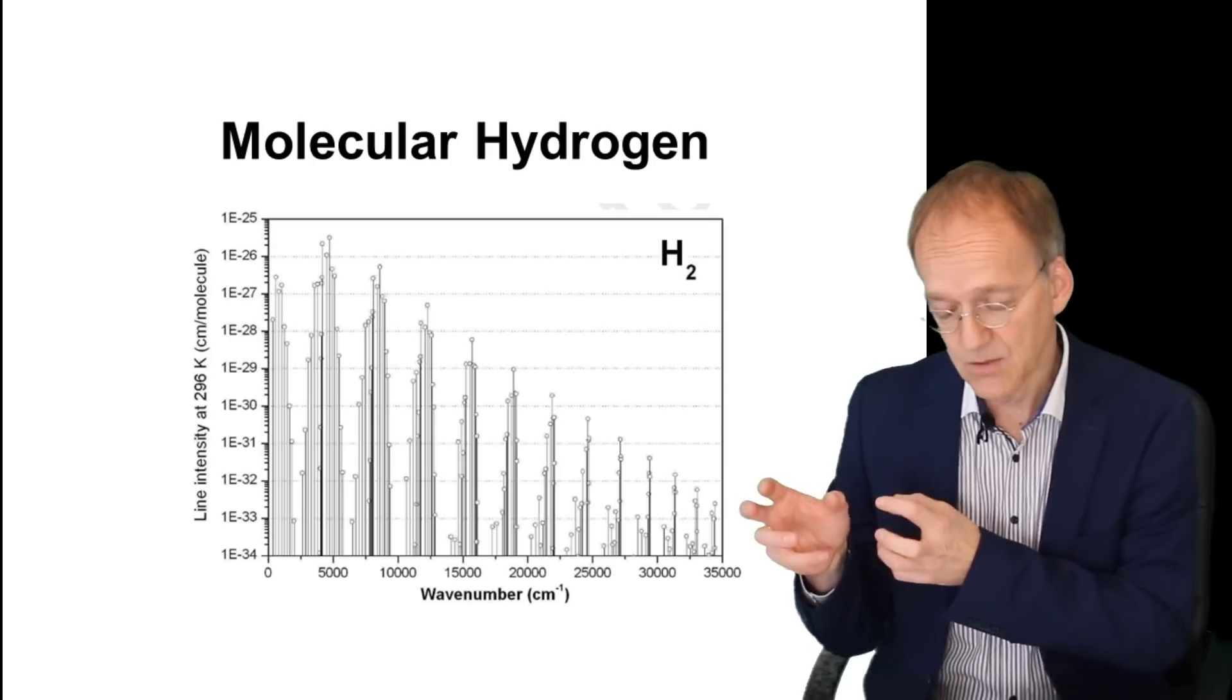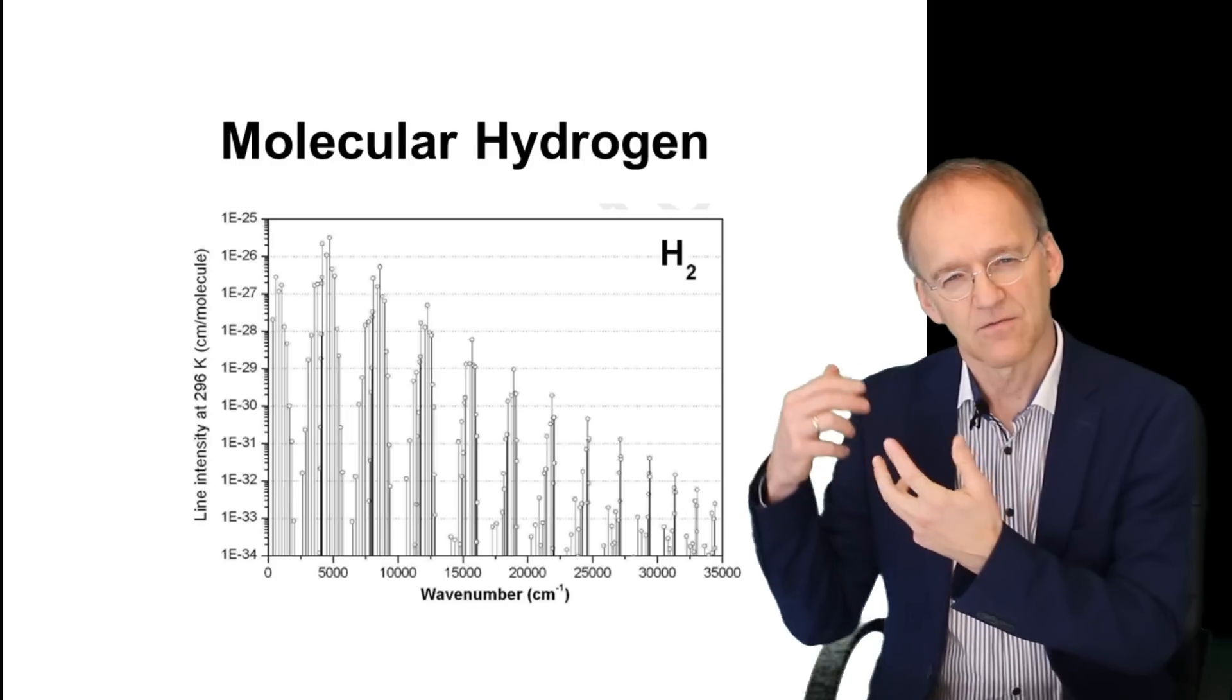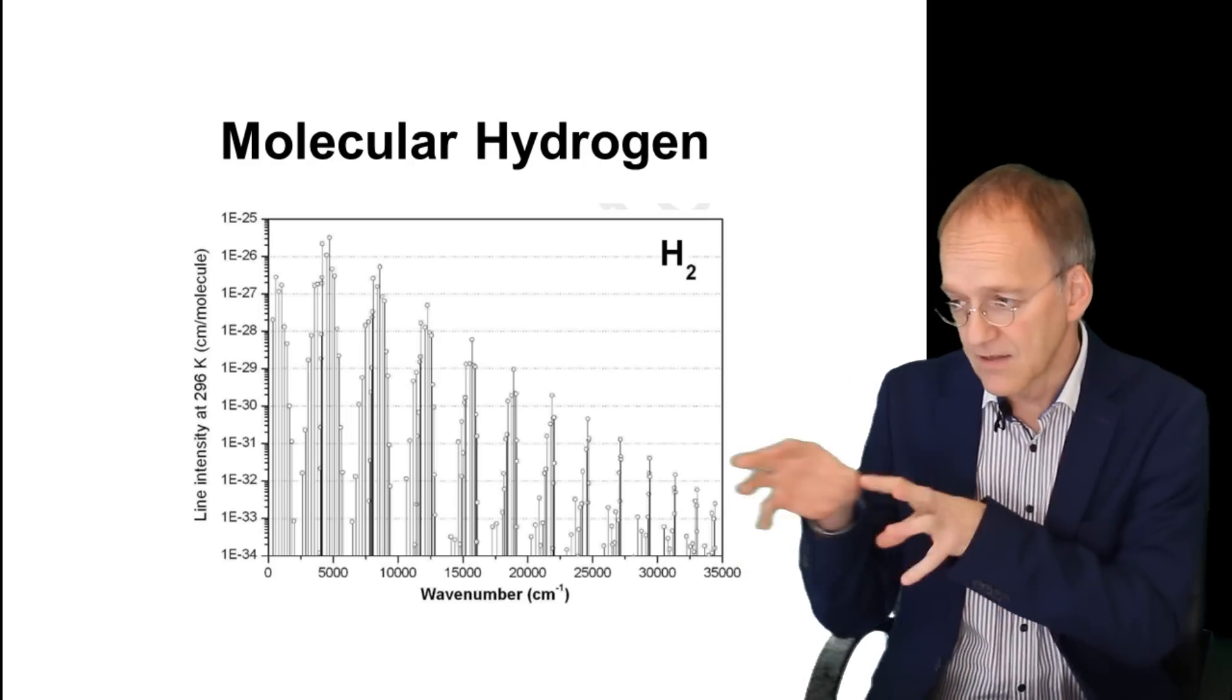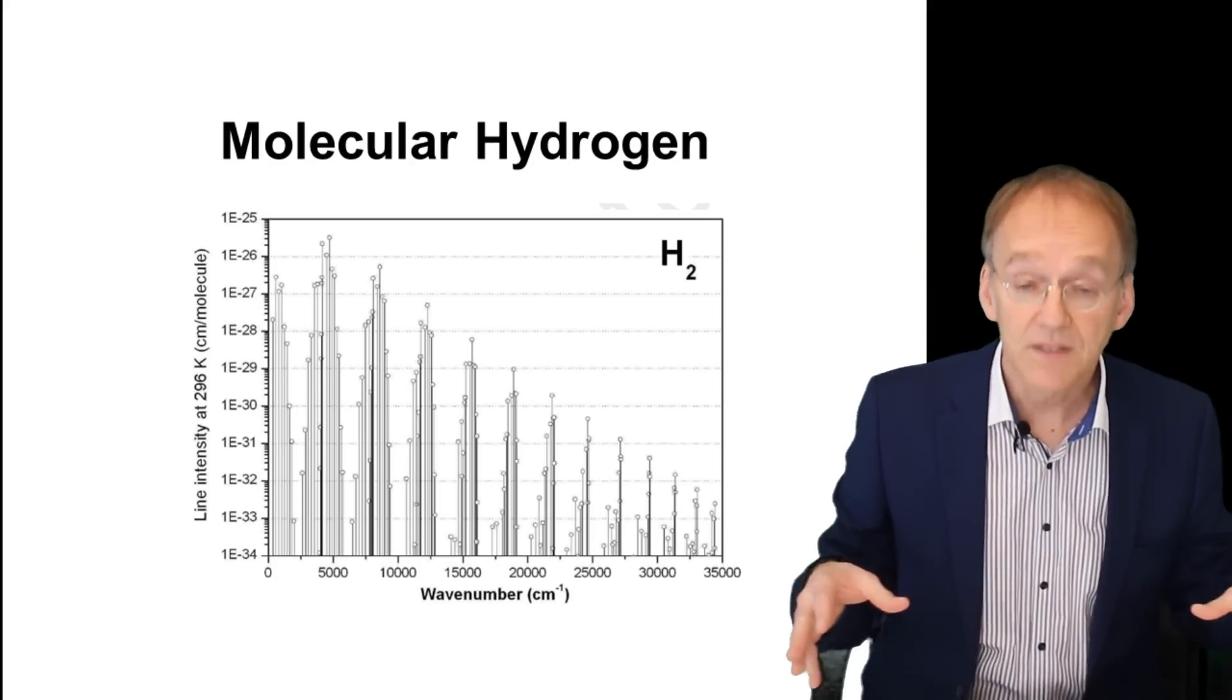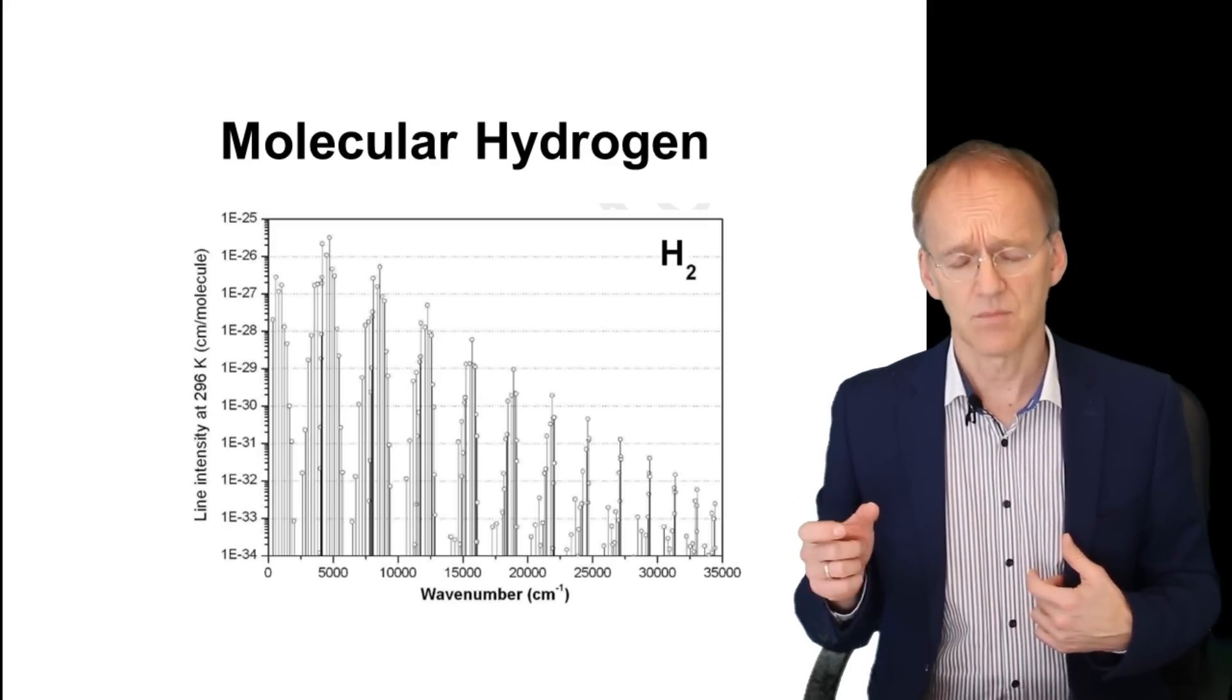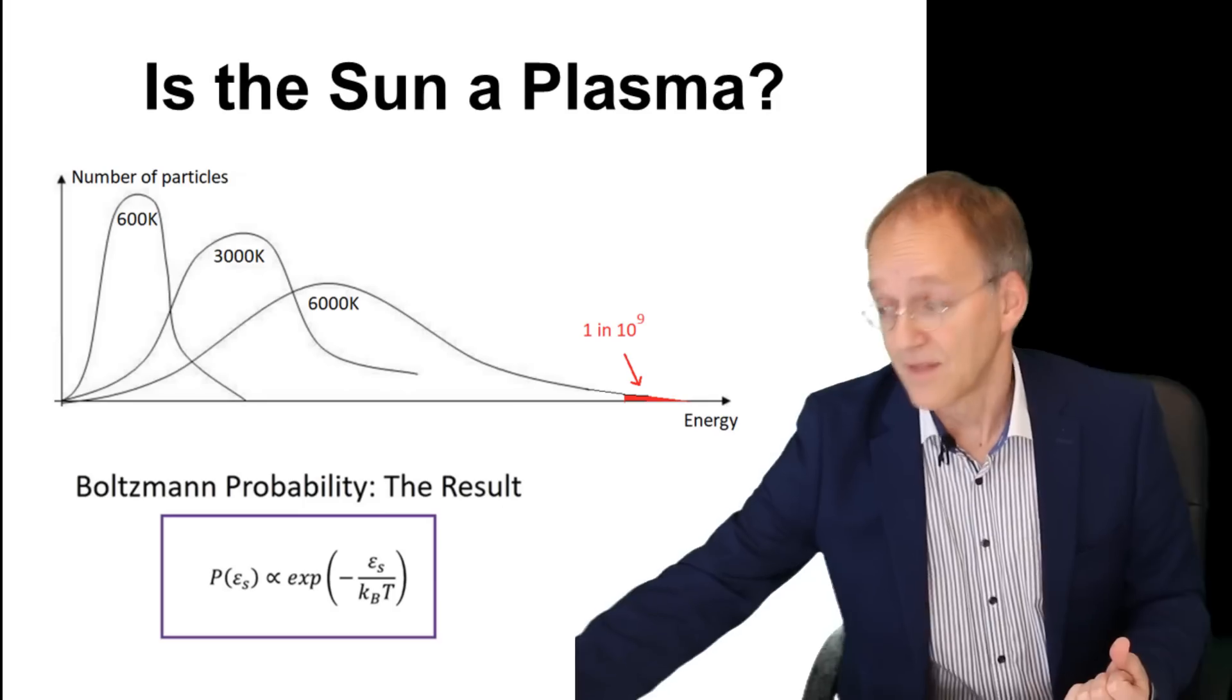Then of course you have molecules, not atoms, in the solar atmosphere, and that adds vibrational and rotational degrees of freedom and you get several more lines. But it's still not continuous. It's true that the bigger the molecule becomes, the more continuous the spectrum, but the hydrogen molecule is still a very simple thing.